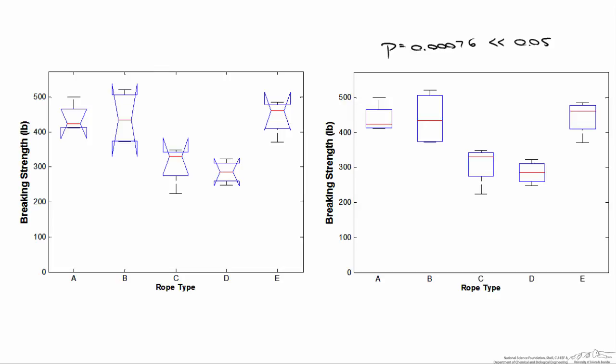And upon visual inspection of the data, it certainly looks like ropes C and D are substantially weaker than ropes A, B, and E.